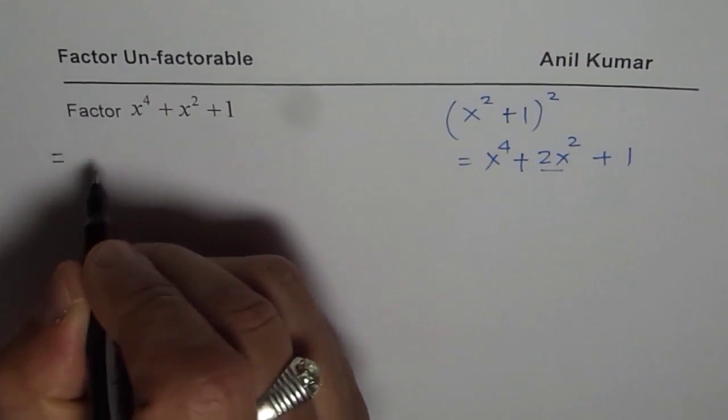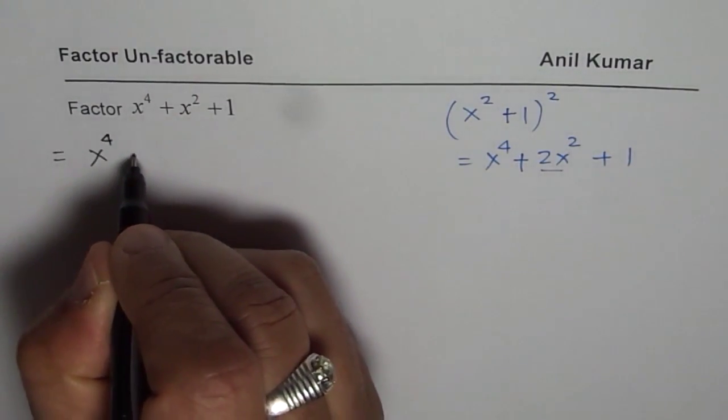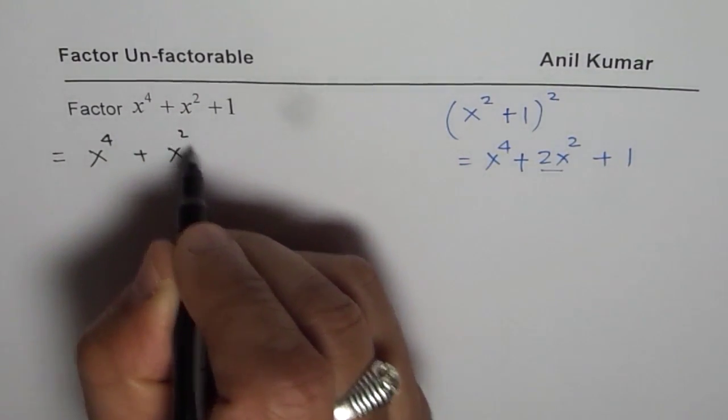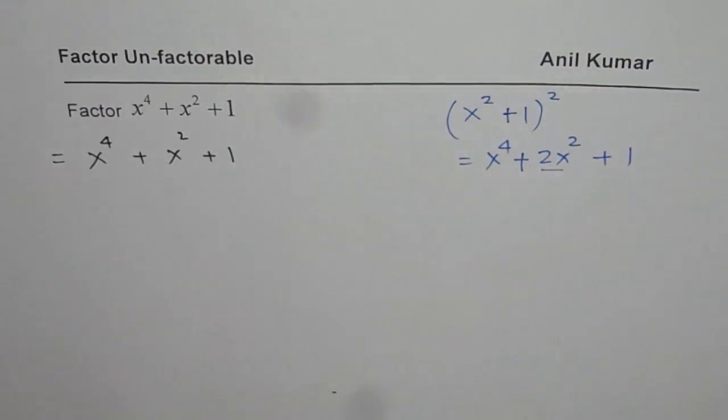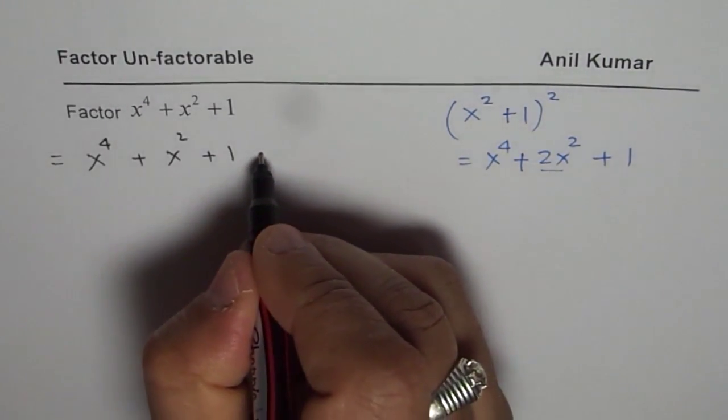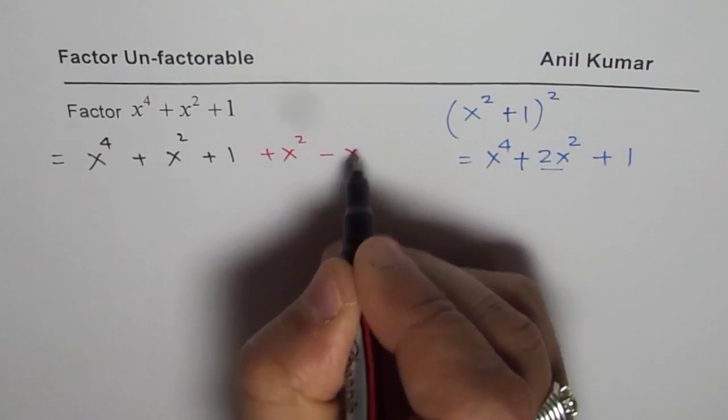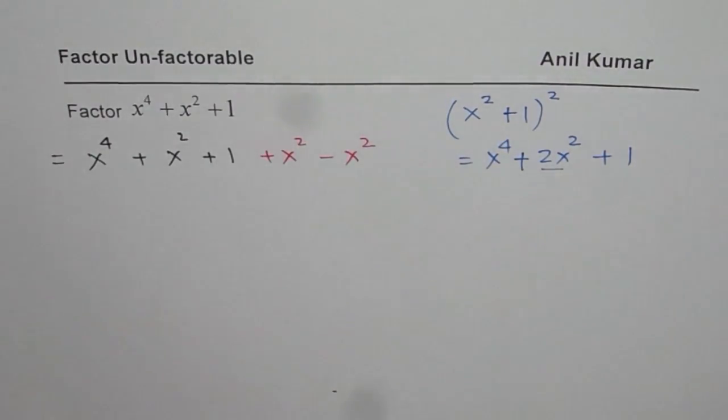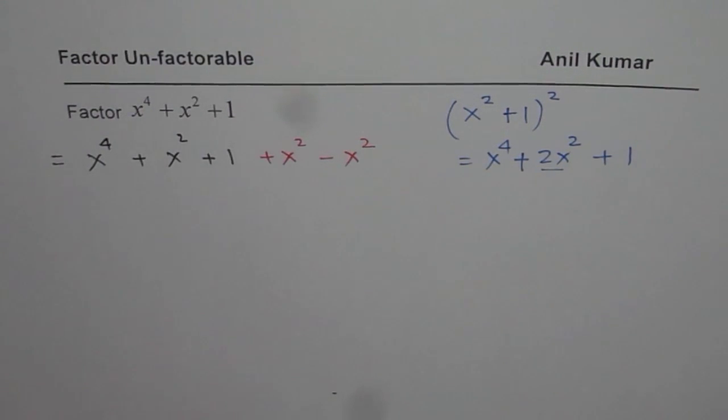So now it can work. So we will write this as x to the power of 4 plus x square plus 1. And we will add and subtract 1x square. Now adding, subtracting x square is not changing the trinomial, right? We have the same expression.